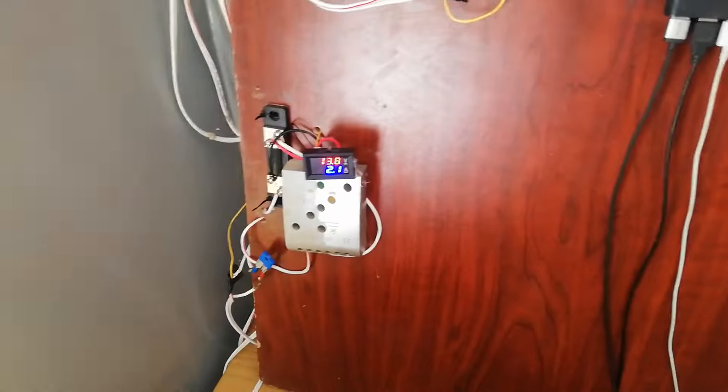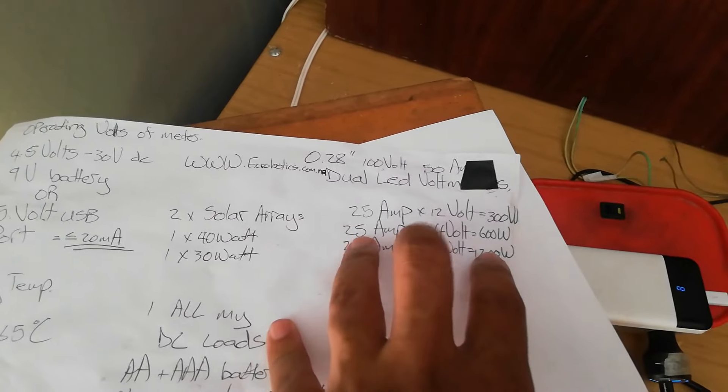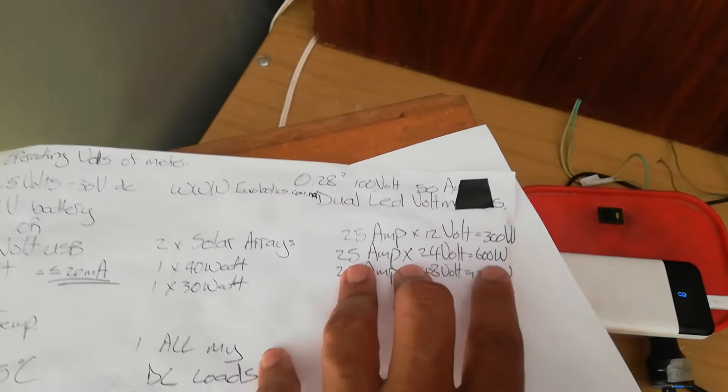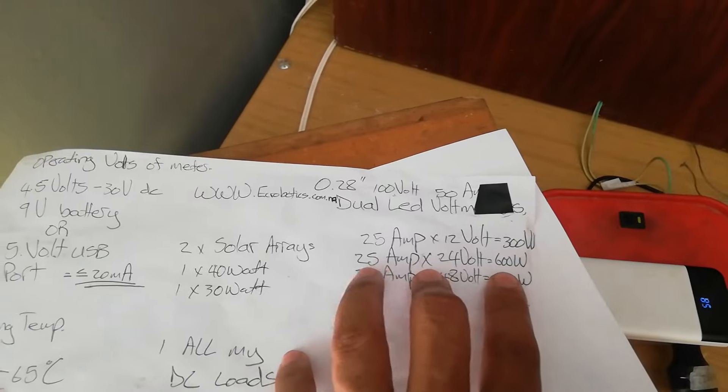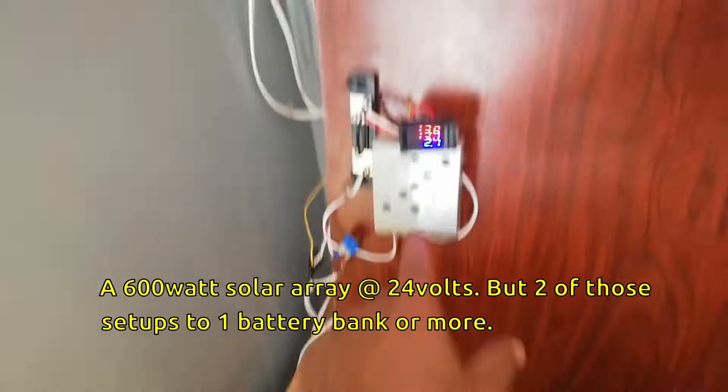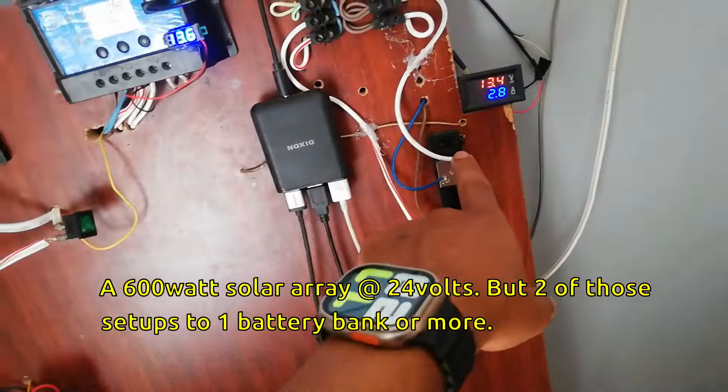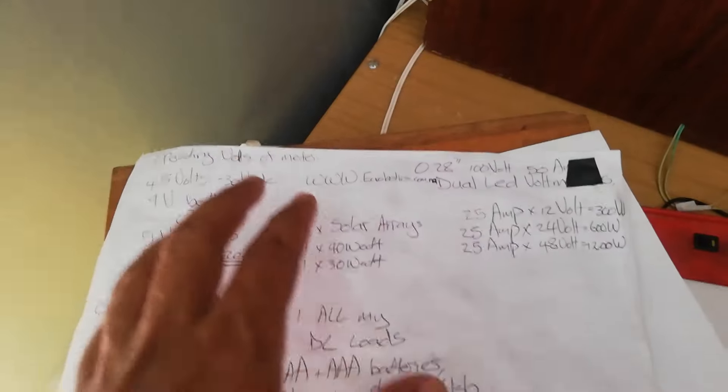Because if I can do that, that simply means I'm now potentially opened myself up to 600 watts. Why 600 watts? Because 25 amps is the max that I want to push through this VA meter, volt amp meter.